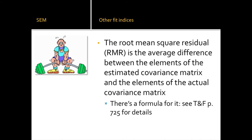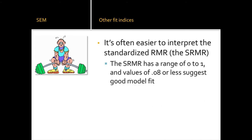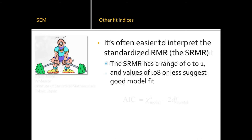The SRMR is the average difference between elements of the estimated and actual covariance matrices, standardized to a range of zero to one. The criterion is 0.08 or less — similar to RMSEA. This is another way of comparing covariance matrices. The Akaike Information Criterion (AIC) is used in and out of SEM for comparing competing models to each other; there's no single cutoff, you just compare models' AIC values.